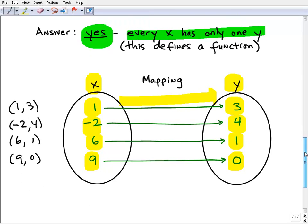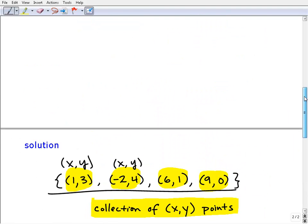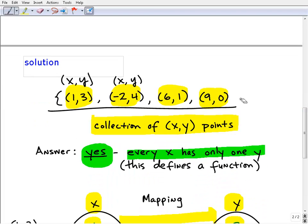So let's think of an example where this would not be a function. Let's say that 9 also mapped to the point 15. That means that (9,15) would also have been included in your collection. So let's add this in: (9,15). And if this was the collection of points, we can see that 9 is being paired up with 0, and 9 is also being paired up with 15. So this breaks the rule or the definition of a function. So this would not be a function.